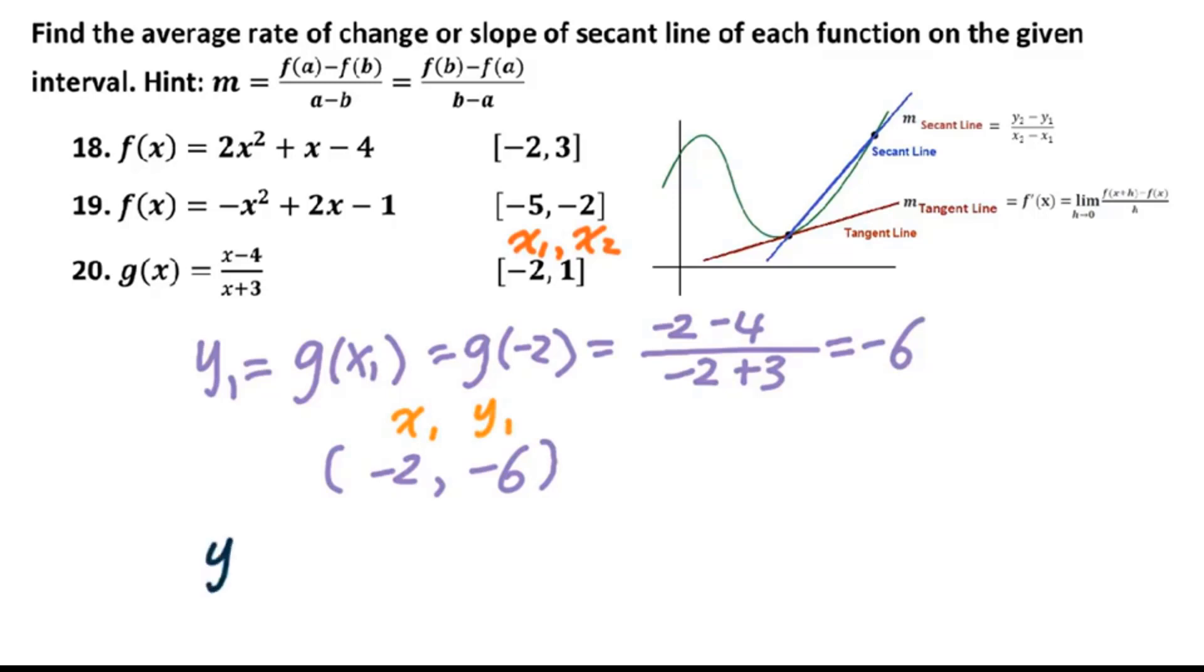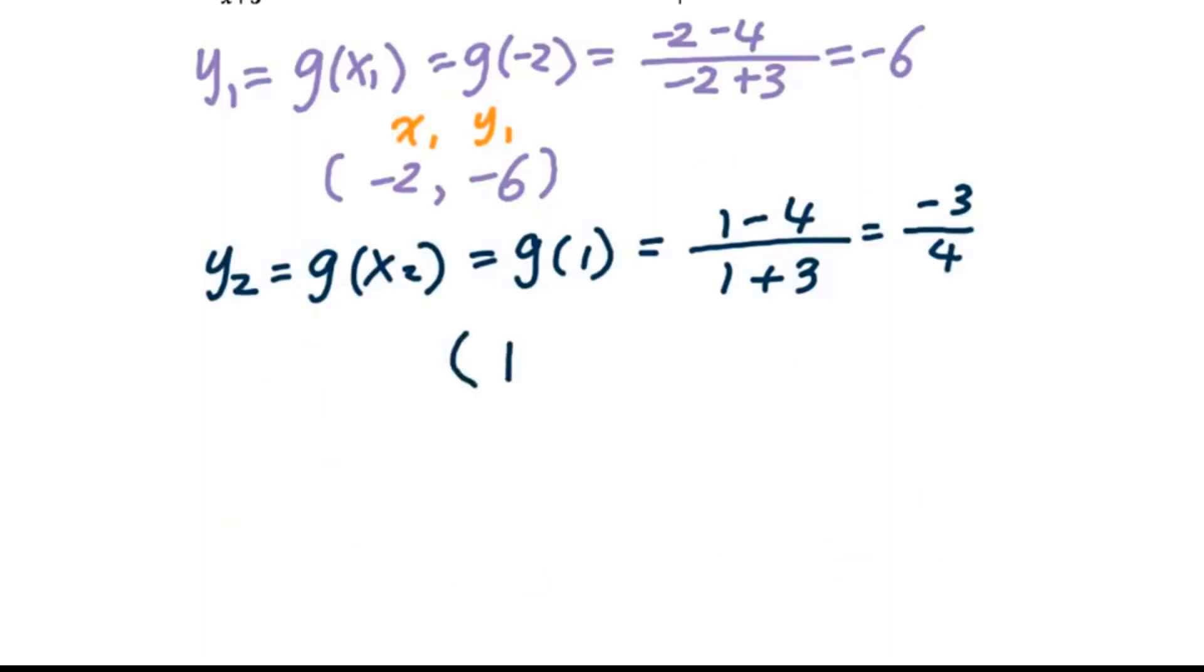Then y2 equals g of x2 equals g of 1. Plug in. We got 1 minus 4 over 1 plus 3. So we got negative 3 over 4. Therefore, 1 and negative 3 over 4 will be the x2, y2.